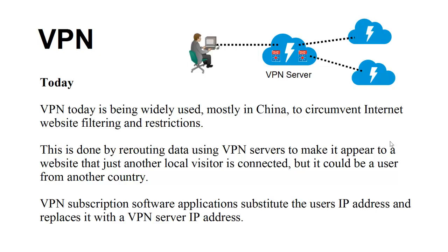VPNs are pretty common today, and proxy servers are also used to get around web restrictions. This is done by rerouting data using VPN servers to make it appear to a website that just another local visitor is connected. The VPN server could be in one country while the users accessing it are from another, allowing people to access content like YouTube, which is not available worldwide and is restricted in some countries.